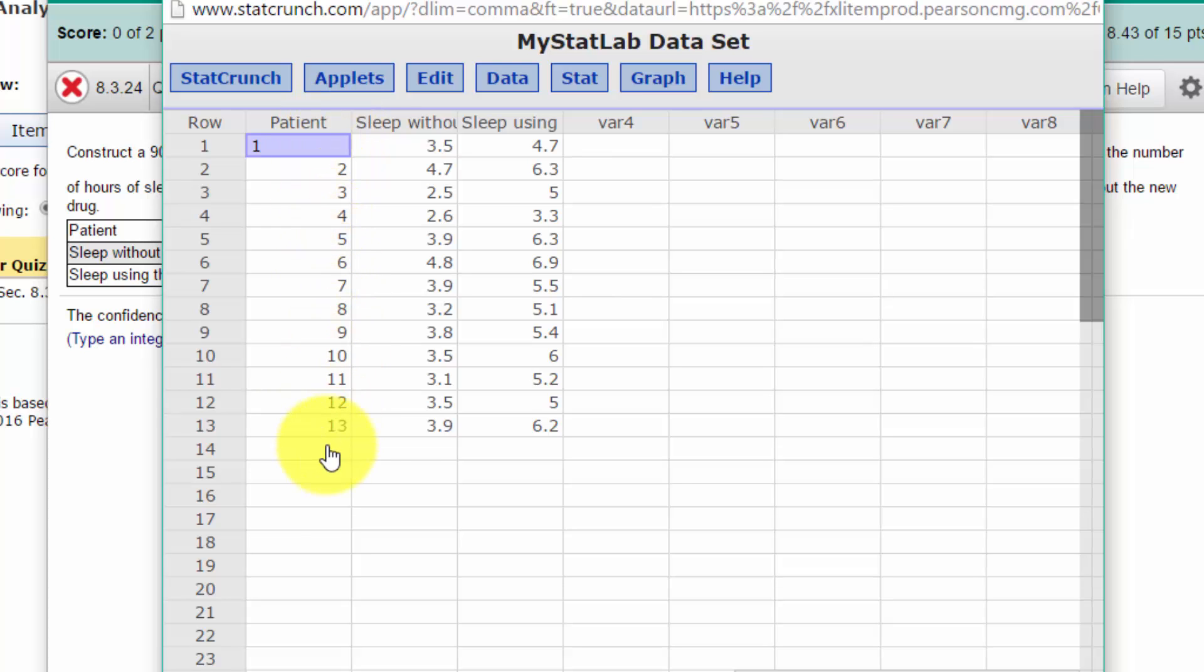The first column lists our patients, we've got a column that shows the sleep without using the aid, and then sleep using the aid. That should tell you—because you've got one patient and two measurements—this is a paired samples test, and we're going to get a confidence interval for this paired sample.